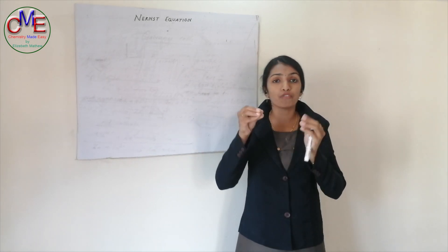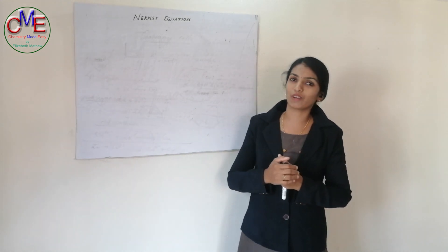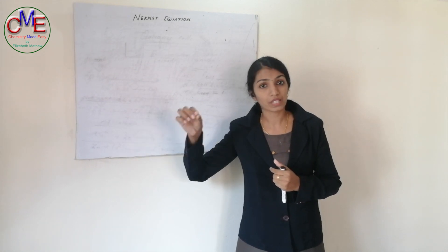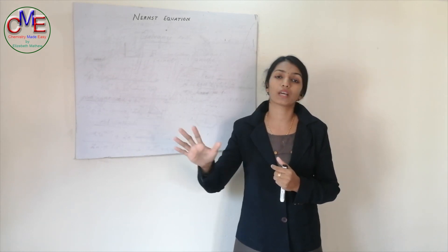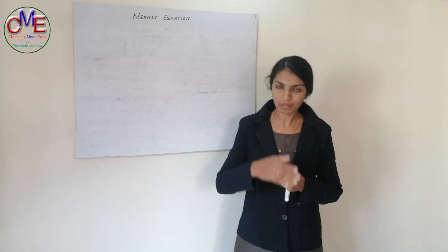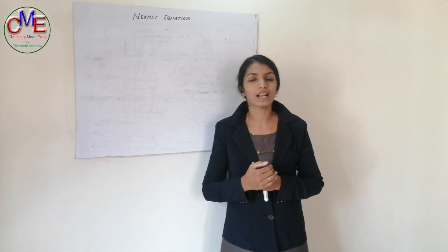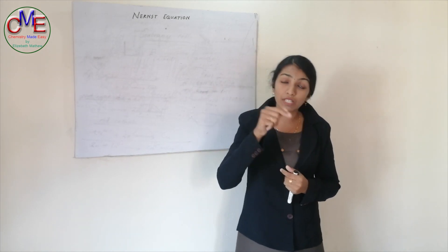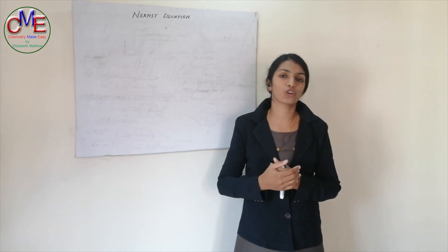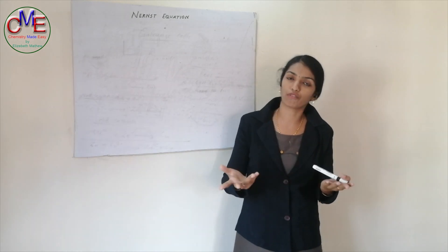Similarly, if you dip a copper electrode in one molar copper sulfate solution, the resulting potential is the standard reduction potential of copper, which is plus 0.34 V, also obtained from the electrochemical series. But if you change the concentration of zinc sulfate solution or copper sulfate solution, the corresponding potential values differ.